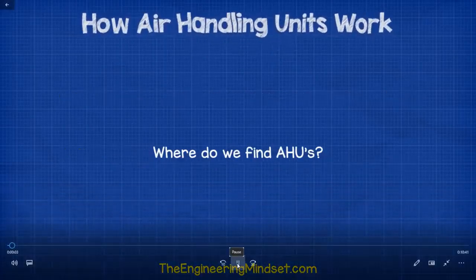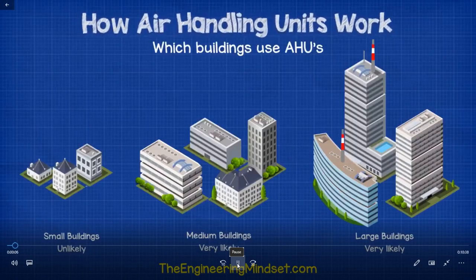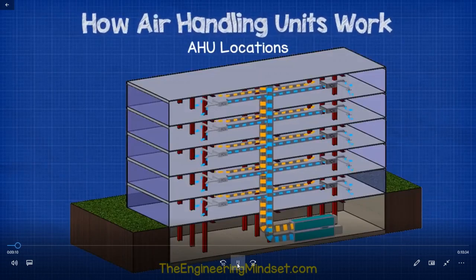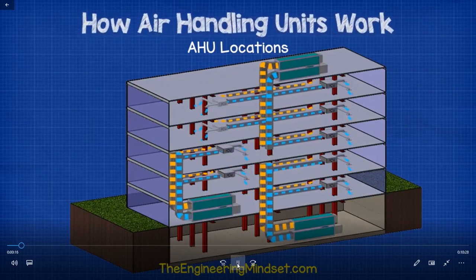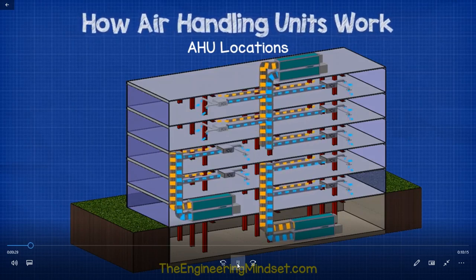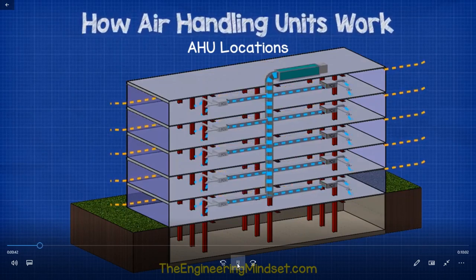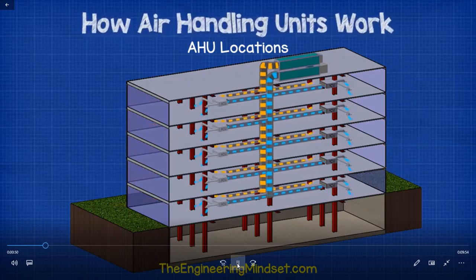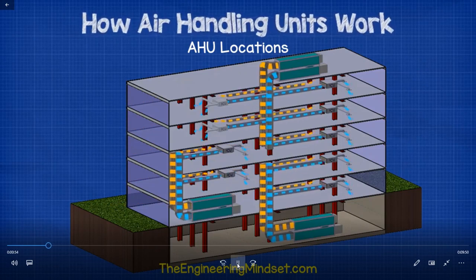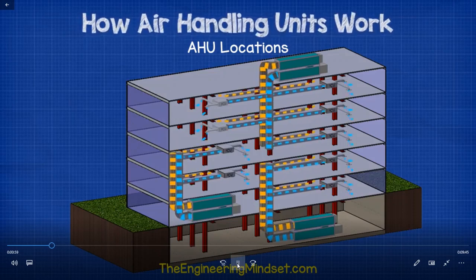Air handling units — usually abbreviated AHU — are found in medium to large commercial and industrial buildings, usually located in the basement, on the roof, or on the floors of a building. Many large buildings will have a mixture of all of these. AHUs serve a specified area or zone within a building, such as the east side or office areas from floors 1 to 10, or perhaps a single purpose such as just the building's toilets. It is very common to find multiple AHUs around a building. Some older high-rise buildings have just one large AHU on the roof supplying the entire building, but this design is no longer common because it is very inefficient.